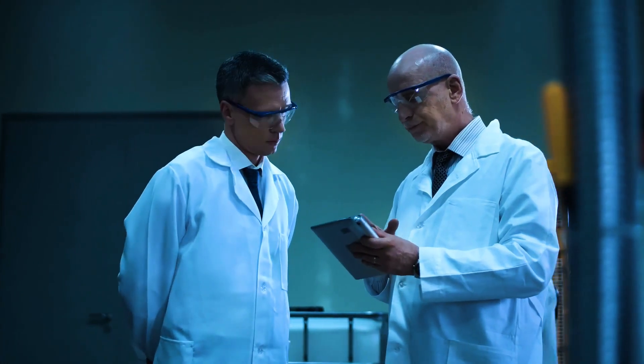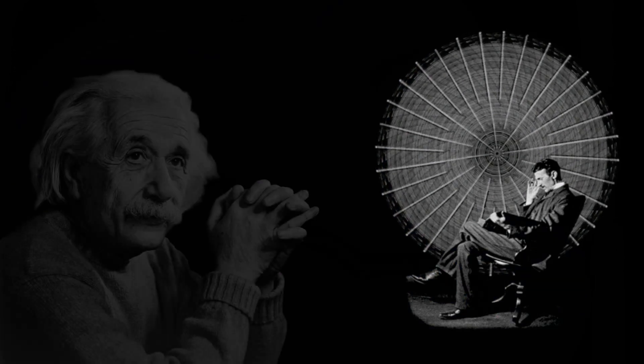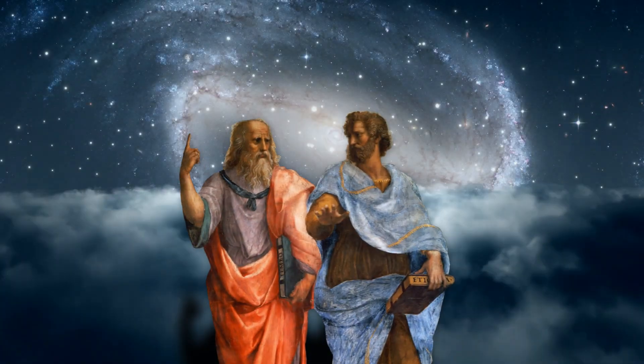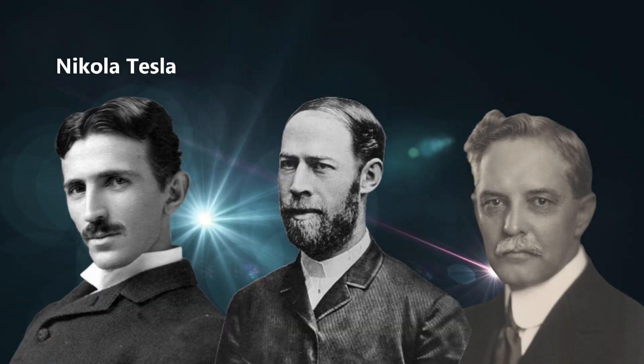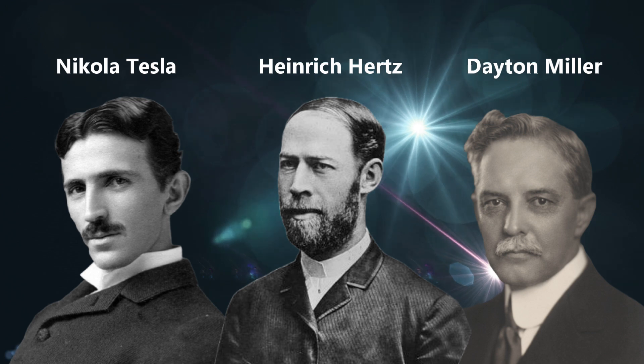This idea still baffles today's physicists, but was understood by Nikola Tesla long before Albert Einstein. There have been many claims and theories made by alchemists, philosophers, and real scientists, such as Nikola Tesla, Heinrich Hertz, and Dayton Miller, that confirmed the ether's existence.